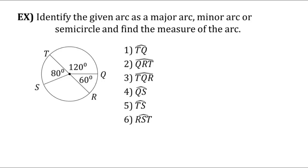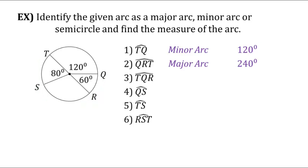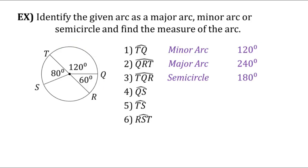Now identify the given arc as a major arc, minor arc, or semicircle and find the measure. Number one, arc TQ — we can see the central angle right there is 120. Since 120 is less than 180 degrees, TQ is a minor arc. Next is arc QRT — it's everything but the 120, so we do 360 minus 120, which gives us 240. Since 240 is greater than 180, QRT is a major arc. Next, arc TQR is 120 plus 60, which adds up to 180, so TQR is a semicircle.